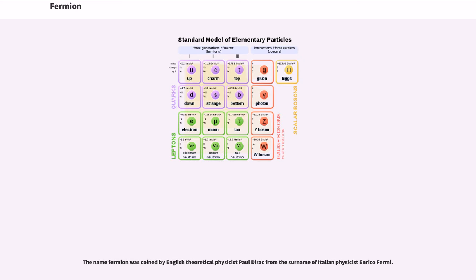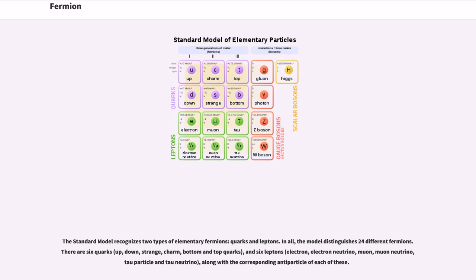The name fermion was coined by English theoretical physicist Paul Dirac from the surname of Italian physicist Enrico Fermi. The standard model recognizes two types of elementary fermions: quarks and leptons.